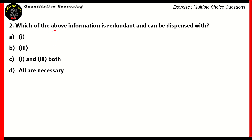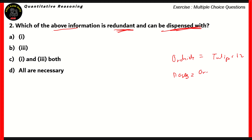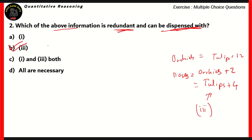Next question: which of the above information is redundant and can be dispensed with? If orchids equals tulips plus two, and roses equals orchids plus two, then since orchids already had two extra than tulips, we can infer roses equals tulips plus four. However, that's the same thing as clue number three. So clue number three is actually redundant here. Therefore option B is the right answer — that's the one that can be dispensed with.